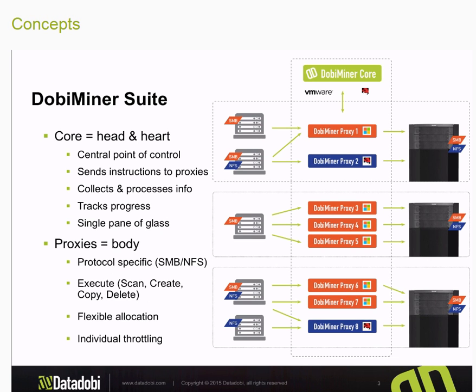The Dolby Miner suite is broken down into two major components. We have the Dolby Miner core, which is effectively the control plane of the overall application suite. It's a single pane of glass that will allow you to configure migrations and actually monitor those migrations from a single vantage point. Behind the scenes the Dolby Miner core issues instructions to the Dolby Miner proxies in order to actually execute the migration. The proxies are effectively the worker bees in the overall operation.